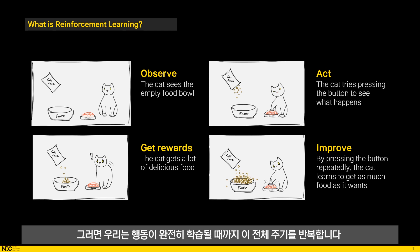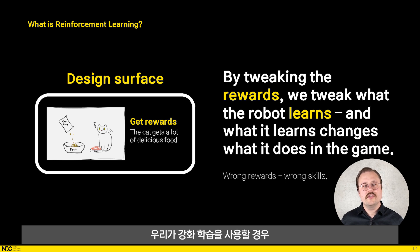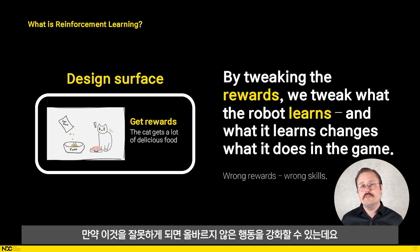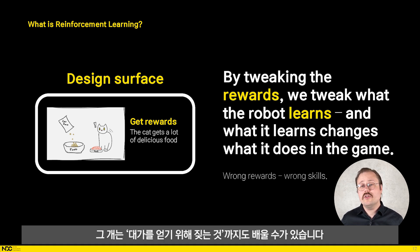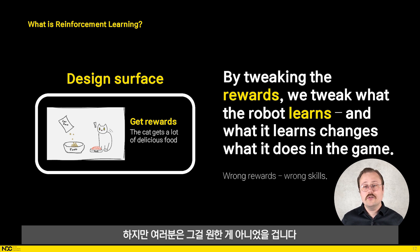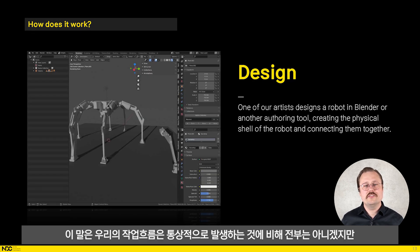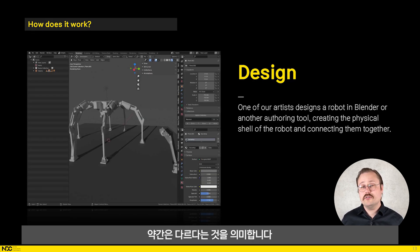When we use reinforcement learning, our biggest control over the behaviour is when we give the food or the rewards. If we do this wrong, it will reinforce the wrong behaviour. If you train your dog to bark on command, it might also learn to bark to get treats — not what you wanted, but you did it wrong. This is the same for us, and the result is a robot that rolls, jumps, or just refuses to walk. This means that our workflow is a bit different than what may happen traditionally, but not everything.